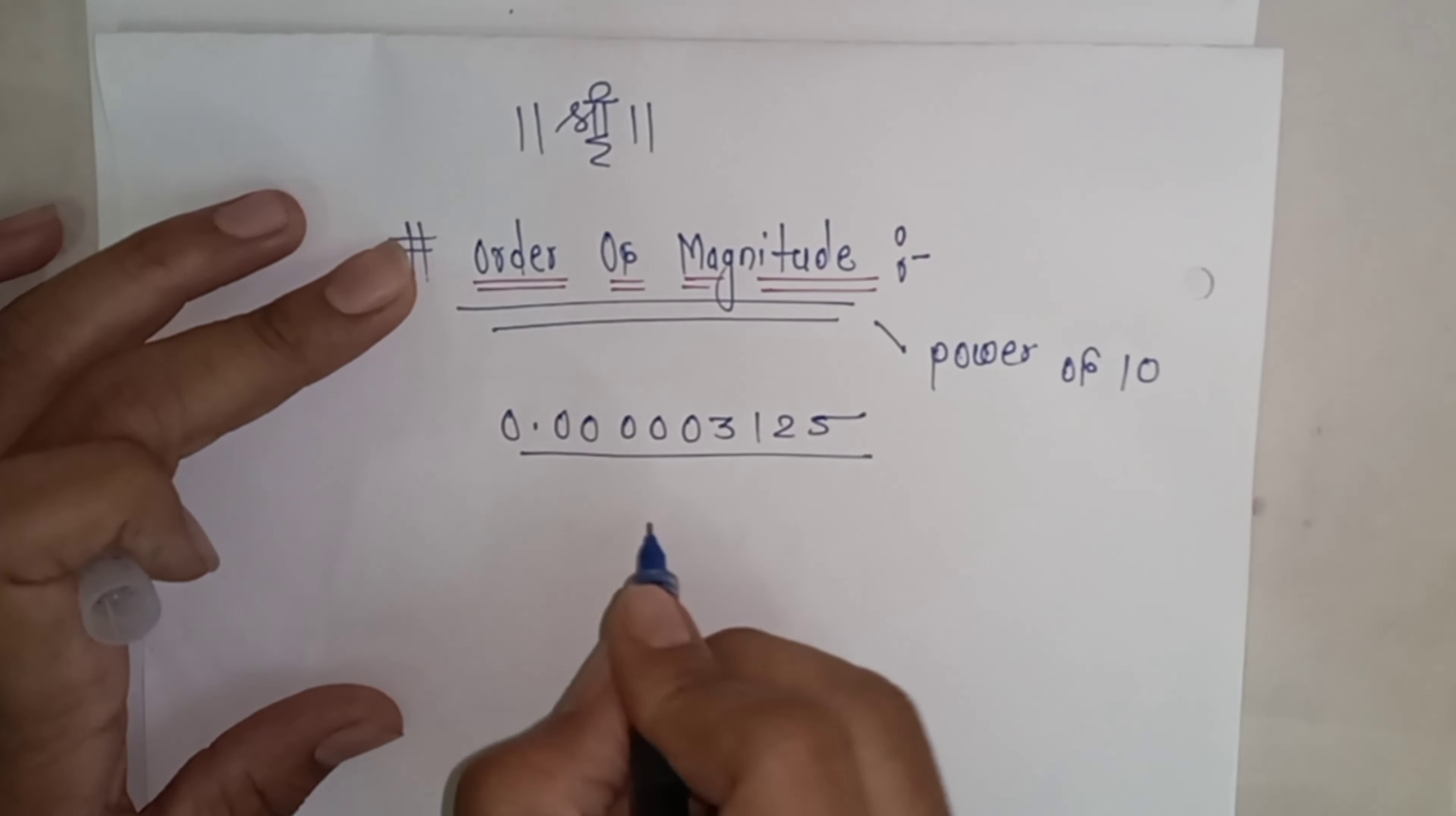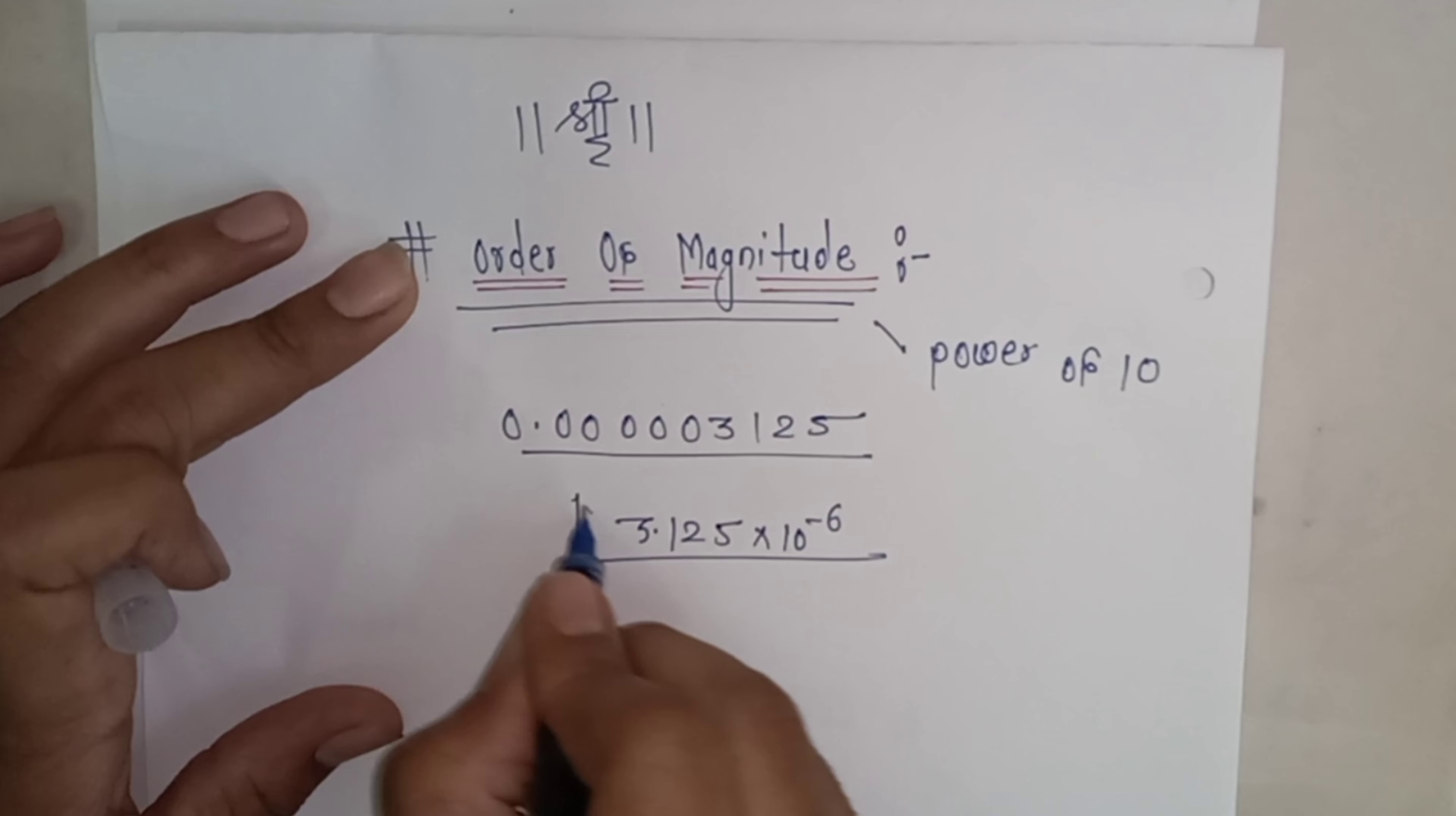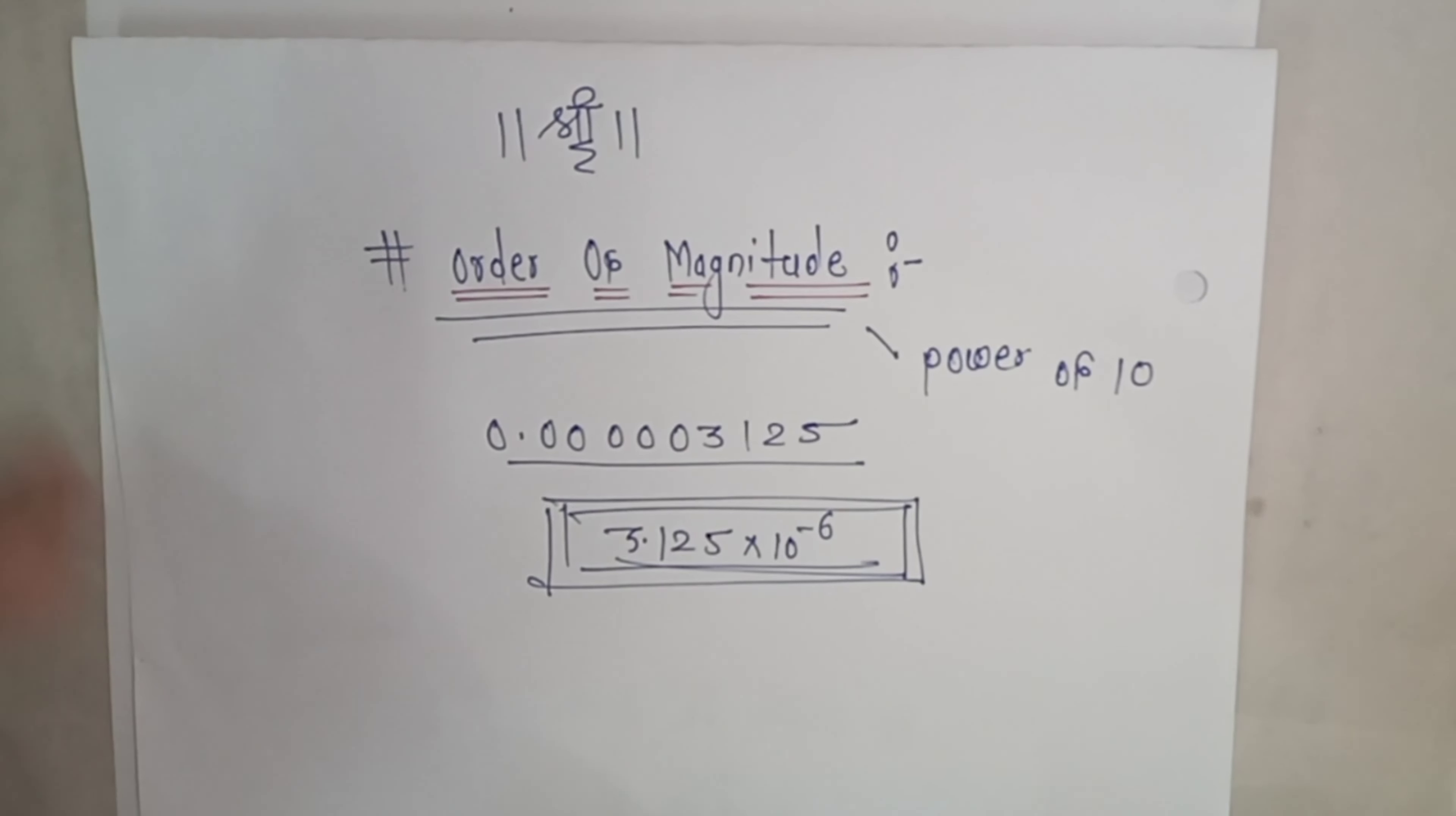Please note, in simpler language, order of magnitude means power of 10. When we have a large number, we can represent it simply, like 3.125 × 10⁻⁶, which is easily understandable. Representing any number in power of 10 is what we call order of magnitude.